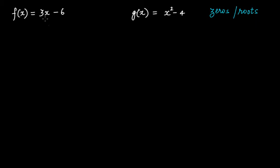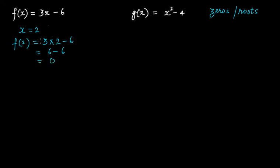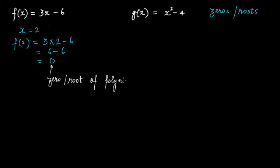Clearly, if you put x is equal to 2 — that is f(2) — this becomes 3 multiplied by 2 minus 6, which is 6 minus 6, and this becomes 0. So for the value x equal to 2, this polynomial fx becomes 0. Its value becomes 0. That's why we say that 2 is the zero or root of polynomial fx in this case.